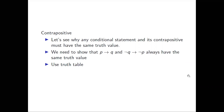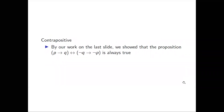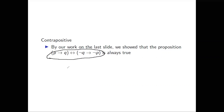This truth table also shows that the biconditional (p → q) ↔ (¬q → ¬p) is always true regardless of the truth values of p and q — we could add an extra column to verify this. That brings us to the end of this video. Thanks for watching.